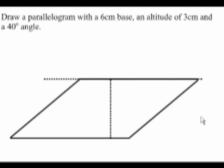The next thing to do is to label it. I'll label my 40 degree angle, I'll label my 6 cm base, and I'll label the 3 cm altitude.